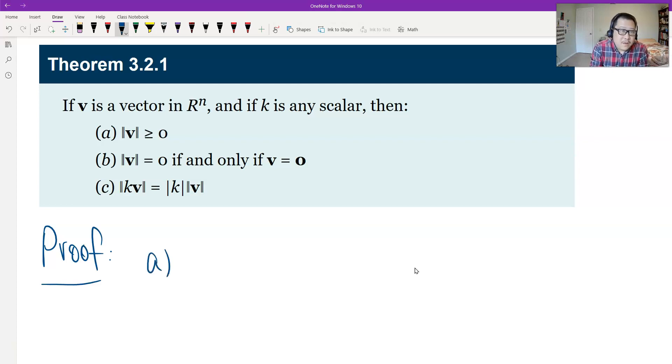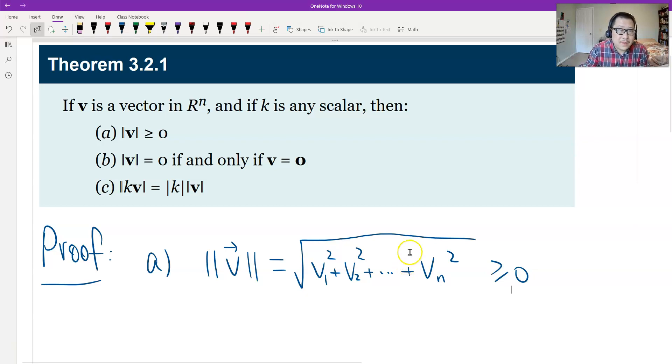So A means the distance is non-negative. Definitely the norm is non-negative because any vector V, the definition of norm is square root of the first component squared plus V2 squared plus Vn squared. Definitely square root is non-negative.